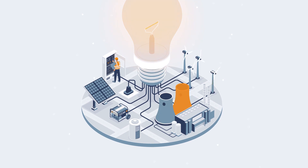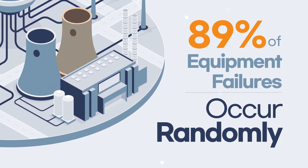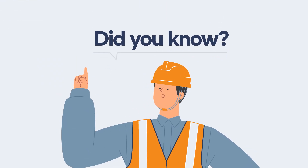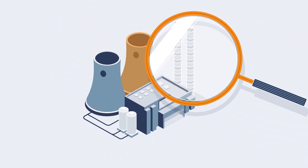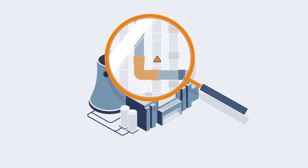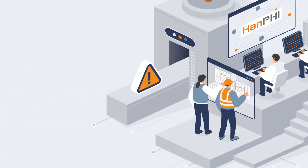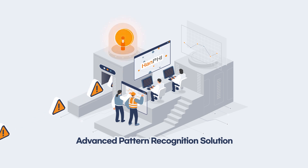89% of equipment failures occur randomly regardless of the age of the equipment. Have you experienced this? Han PHI, an intelligent advanced pattern recognition solution, identifies even the smallest equipment anomaly without fail.